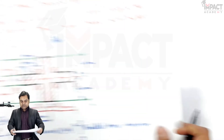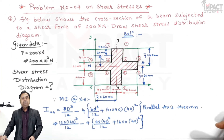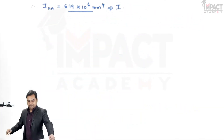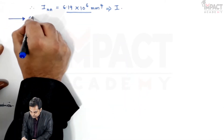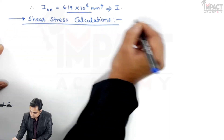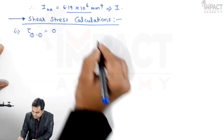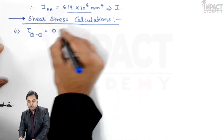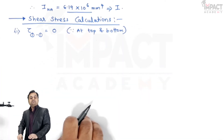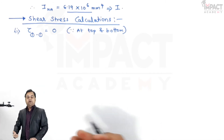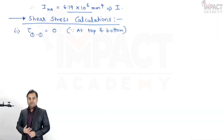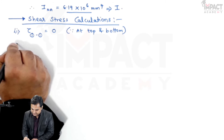Now, after getting the moment of inertia for the complete section, calculate shear stresses at various layers. Starting with the first layer: tau at section 1, which is at the top and bottom, is 0. The shear stress is zero at the top and bottom, as explained in the derivation.